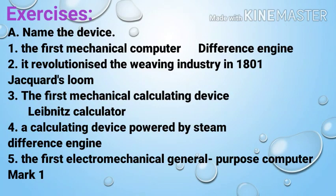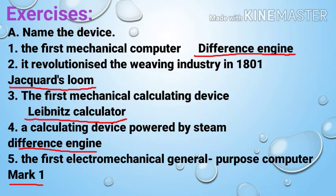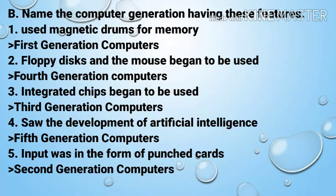Number A: Name the device. Number one: the first mechanical computer — Difference Engine. Number two: it revolutionized the weaving industry in 1801 — Jacquard's Loom. Number three: the first mechanical calculating device — Leibniz Calculator. Number four: a calculating device powered by steam — Difference Engine. Number five: the first electromechanical general purpose computer — Mark One.